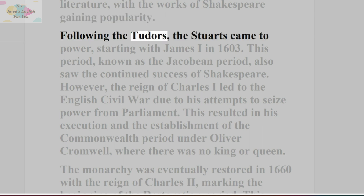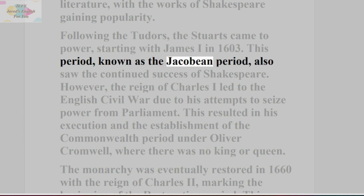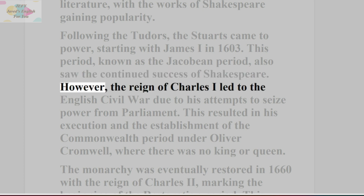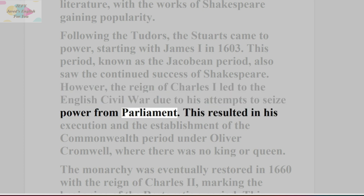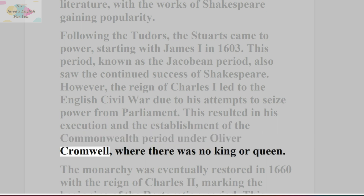Following the Tudors, the Stuarts came to power, starting with James I in 1603. This period, known as the Jacobean Period, also saw the continued success of Shakespeare. However, the reign of Charles I led to the English Civil War due to his attempts to seize power from Parliament. This resulted in his execution and the establishment of the Commonwealth period under Oliver Cromwell, where there was no king or queen.